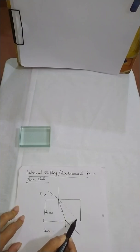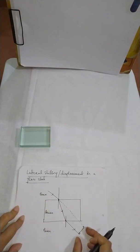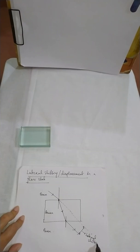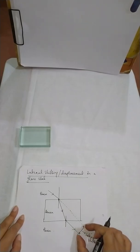Now if you retrace the path of the original incident ray, this is the path. The distance between the original path of the incident ray and the emergent ray is called lateral shifting. This is your lateral shifting or lateral displacement. So I am going to show you experimentally how we are going to see this lateral shifting on my screen.